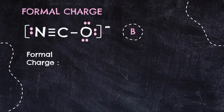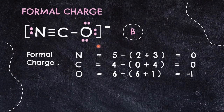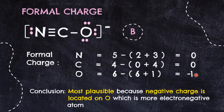For structure B, both nitrogen and carbon have zero formal charge while oxygen has −1 charge. Since oxygen is the most electronegative atom, having the −1 charge on oxygen tells us that structure B is the most plausible structure for NCO⁻.